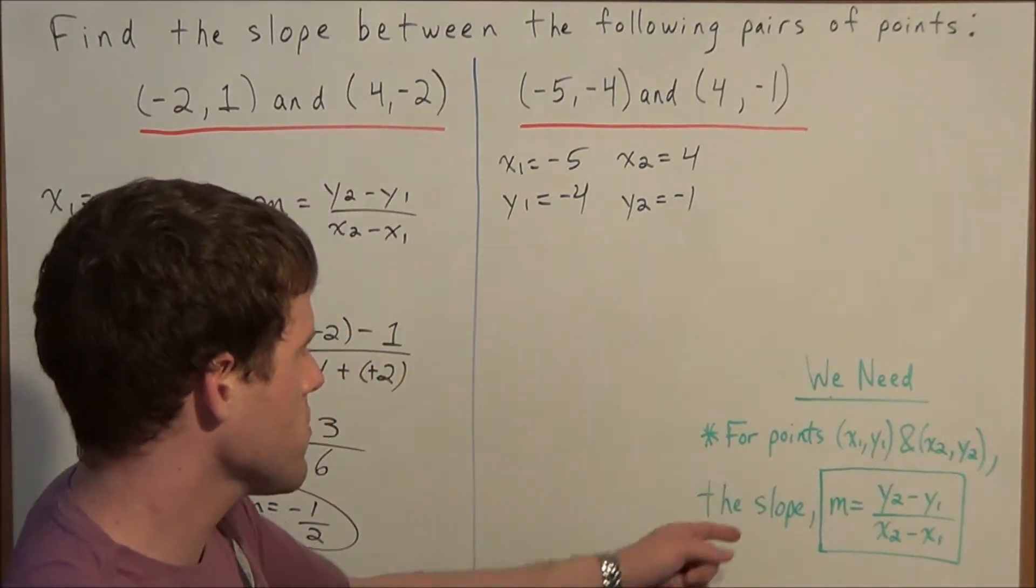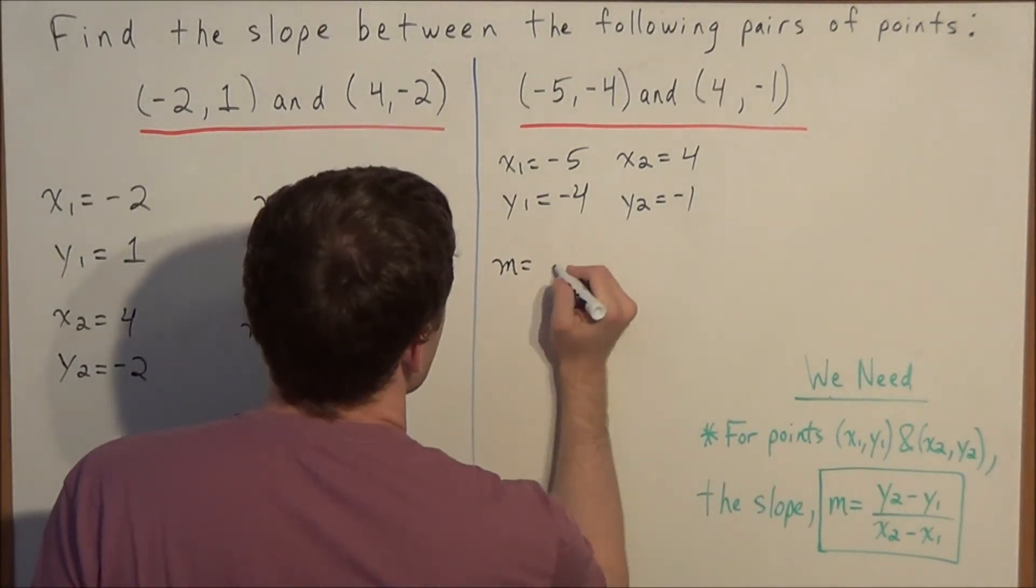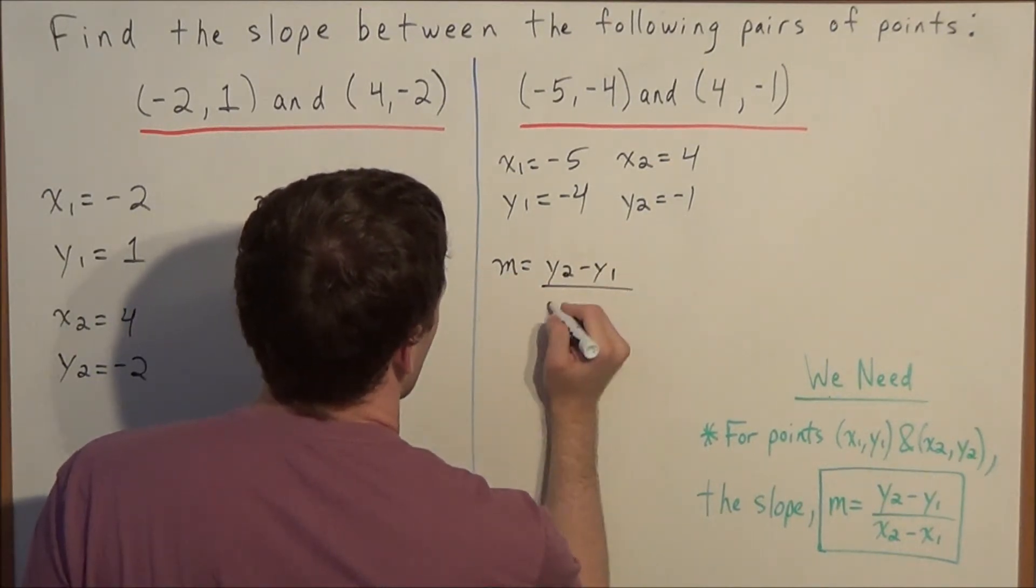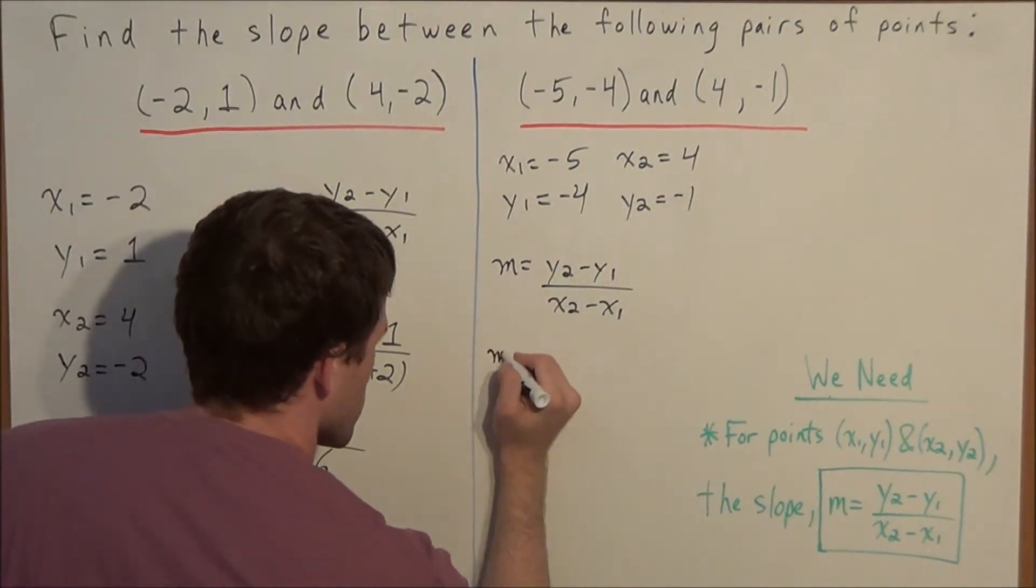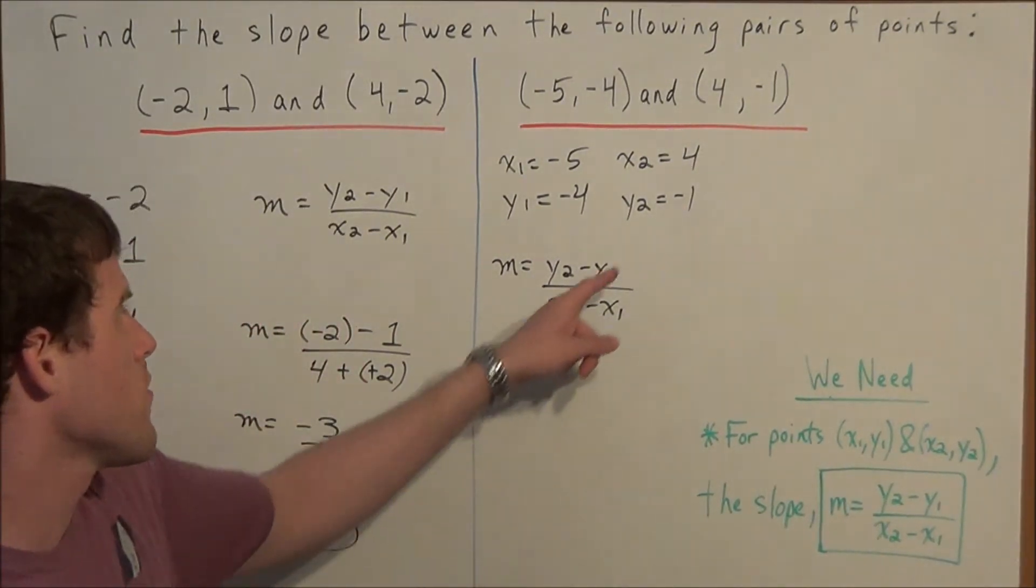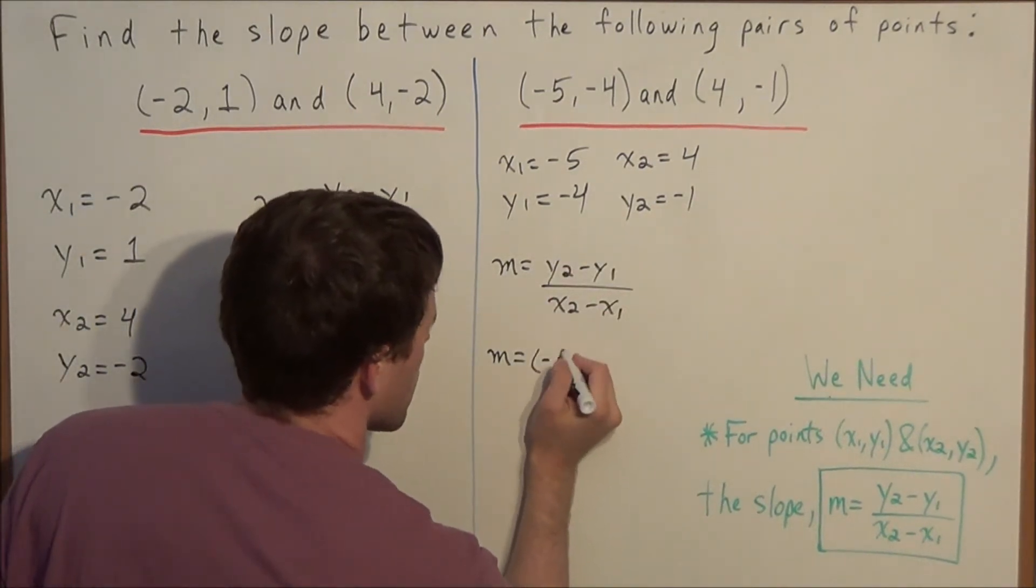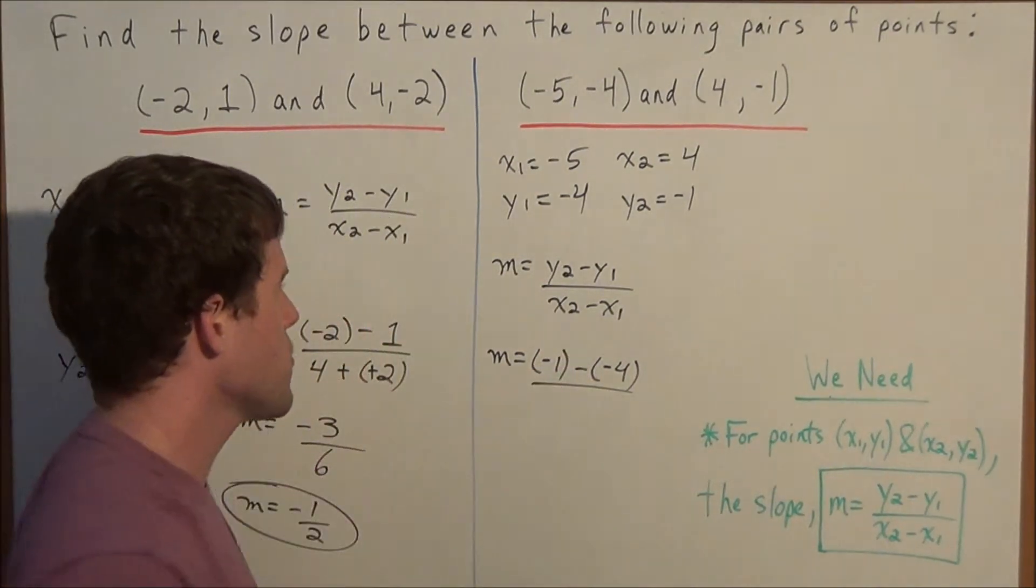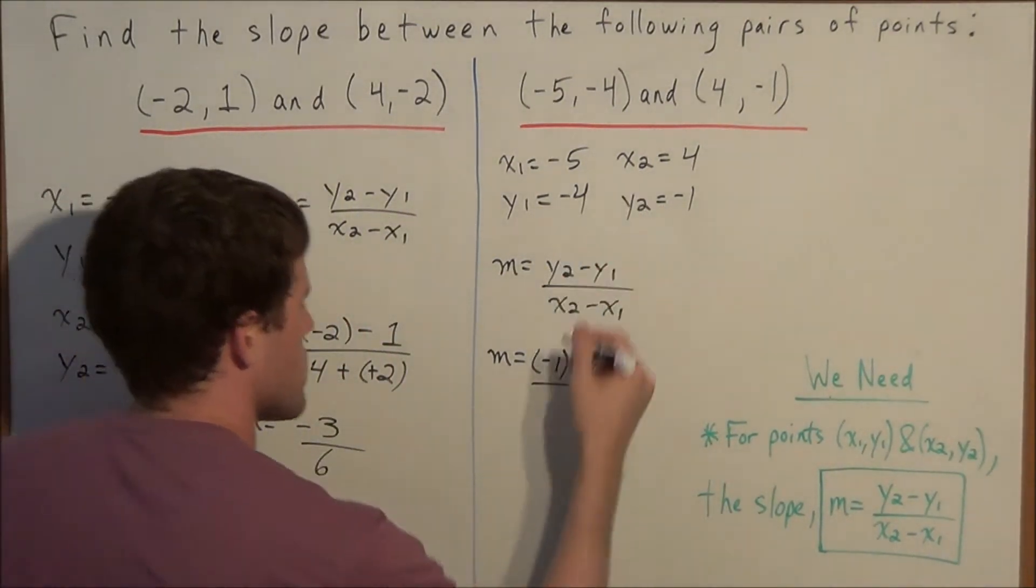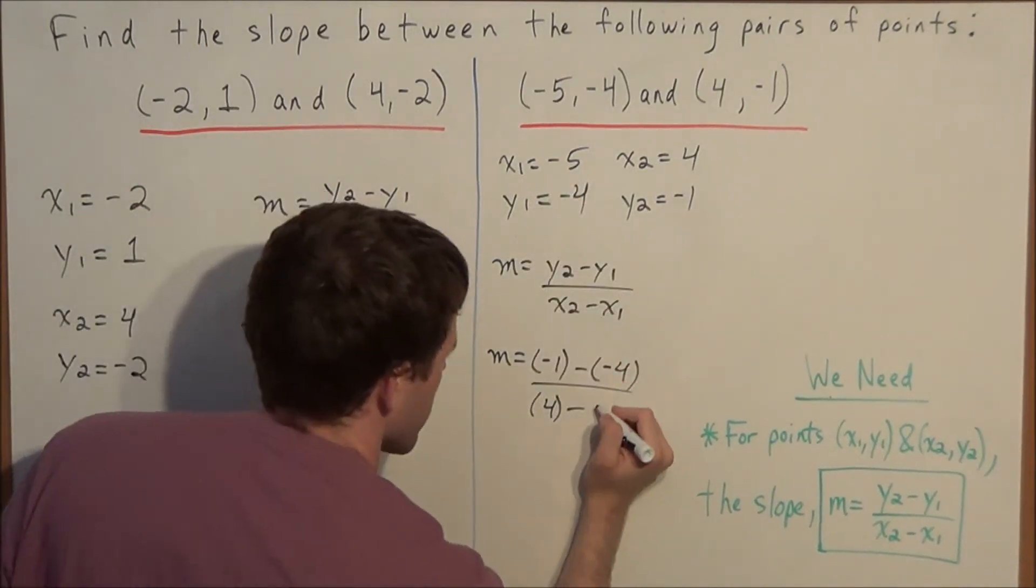So now once again we're going to use this slope equation. So we have m equals y2 minus y1 over x2 minus x1. So now what we need to do is we're just going to substitute. We have y2 minus y1, so we have negative one minus negative four divided by x2 minus x1. So x2 we're going to substitute four minus x1 is negative five.